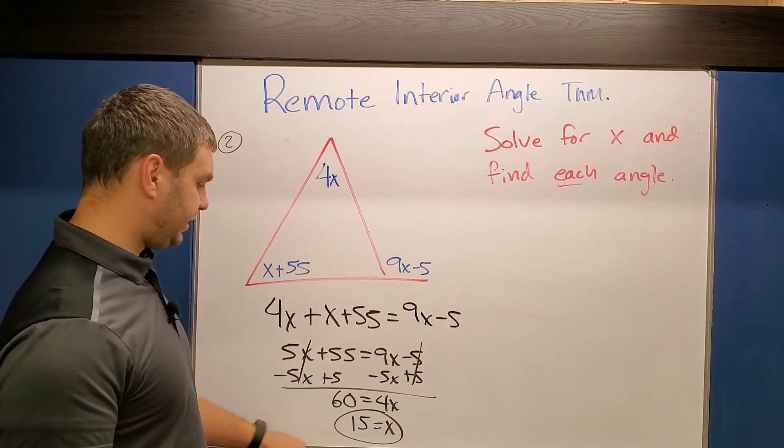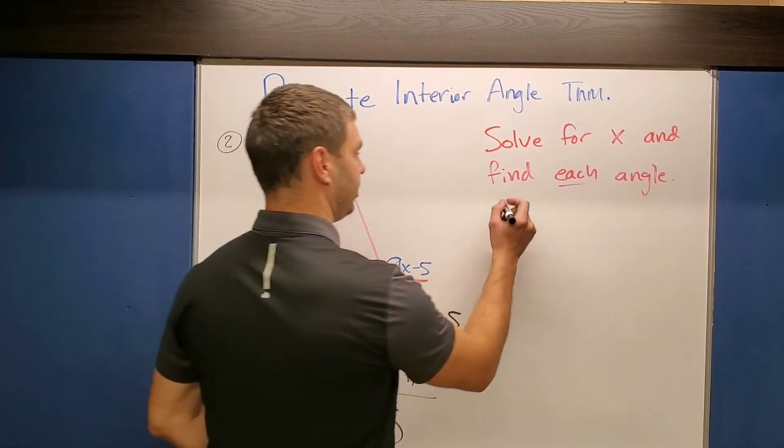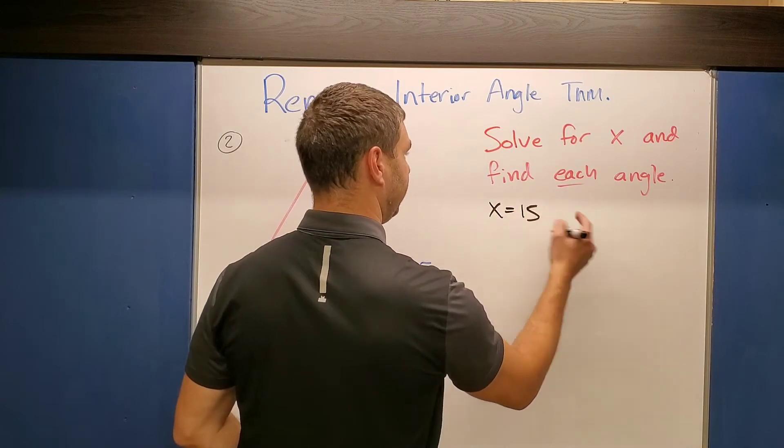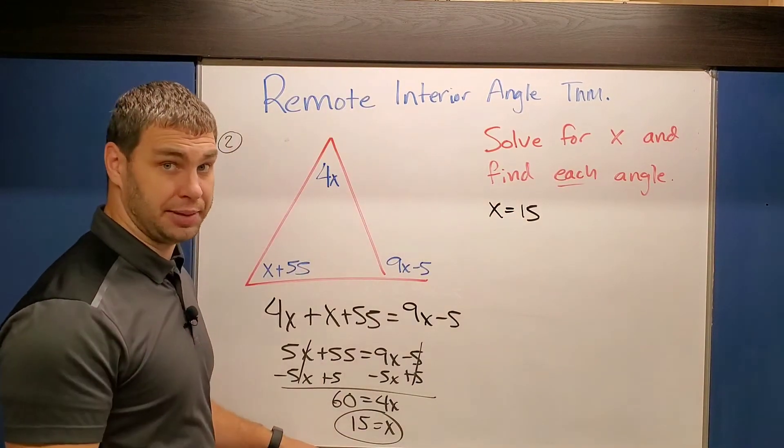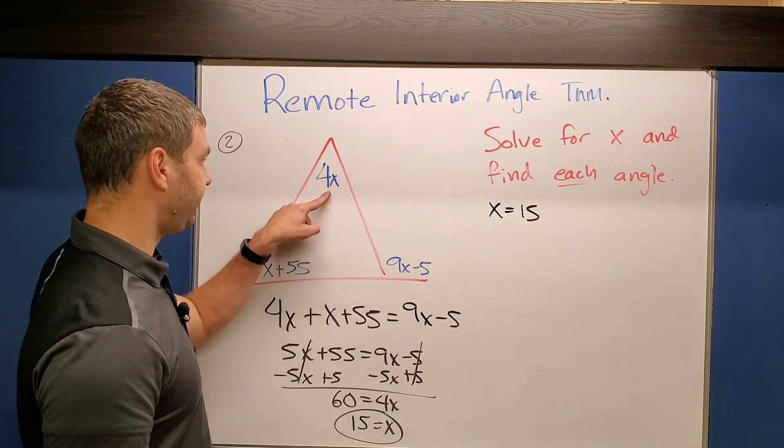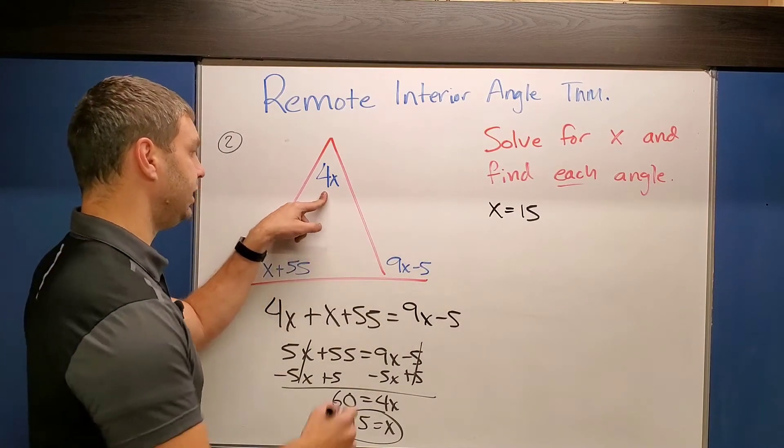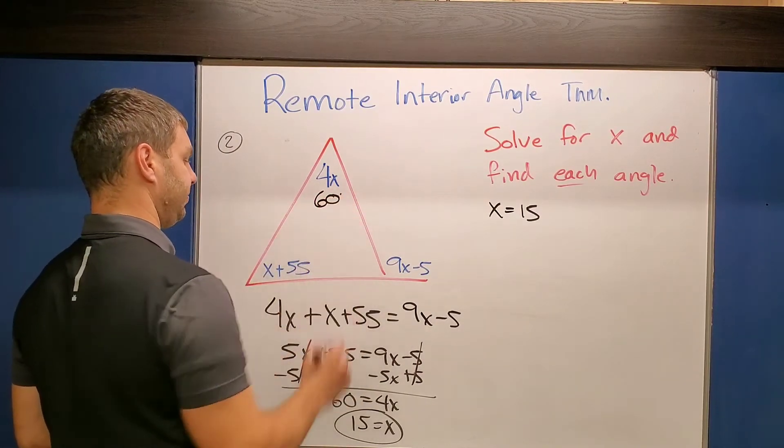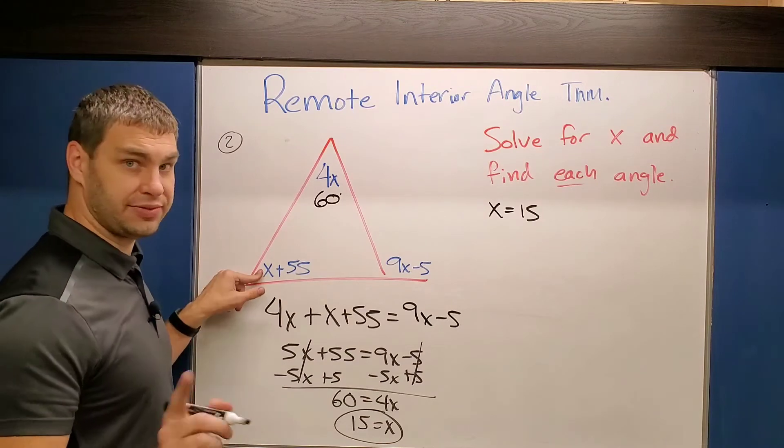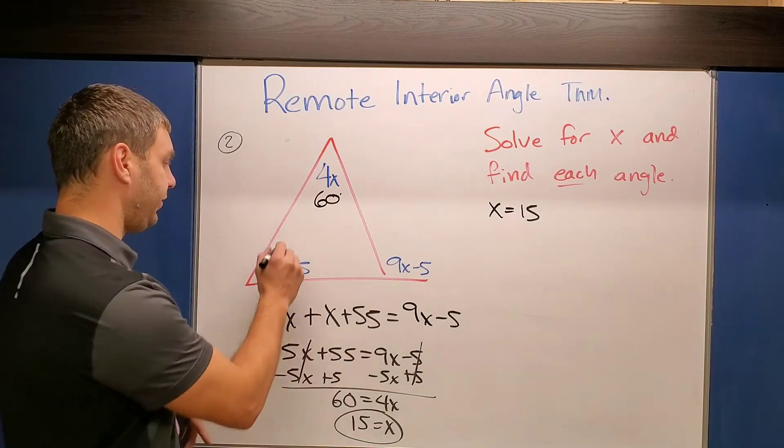All right, so I got X to equal 15, so got part of our goal done. X equals 15. But now I have to plug it back in to find each angle measure. For example, up here 4 times 15, 4 times X is going to be 60 degrees. Or down here if X is 15, then 15 plus 55 is 70.